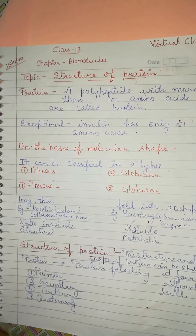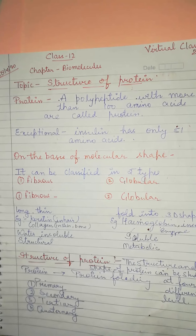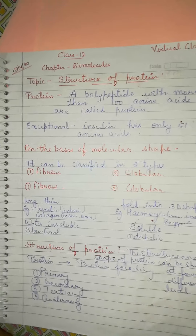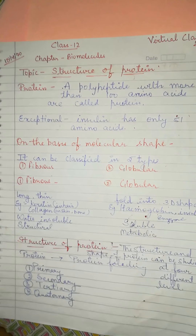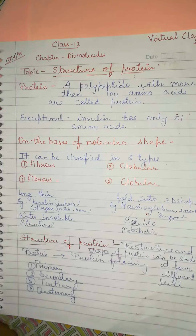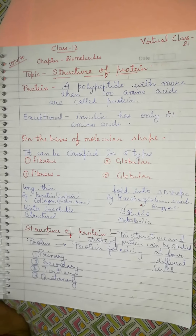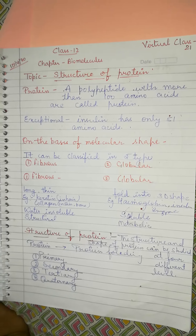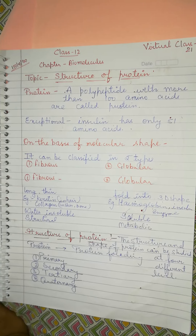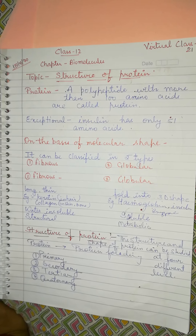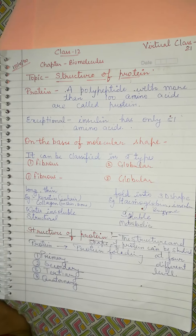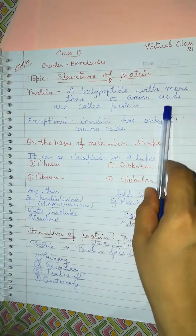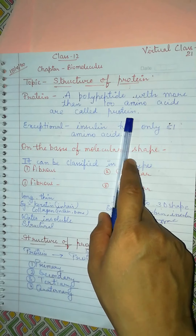2 amino acids form a dipeptide through peptide bond, 3 amino acids form a tripeptide, 4 a tetrapeptide, 5 a pentapeptide, 6 a hexapeptide. And where more than 10 amino acids are attached, we call them polypeptide. And when the number of amino acids in polypeptides goes above 100, we call them protein. So polypeptides with more than 100 amino acids are called protein.